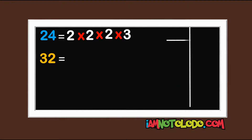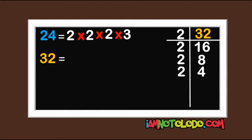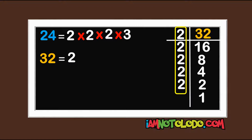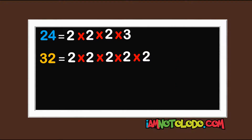Let's do the same thing for 32. 2 in 32 is 16, 2 in 16 is 8, 2 in 8 is 4, 2 in 4 is 2, and 2 in 2 is 1. So let's write these numbers: 2 times 2 times 2 times 2 times 2. Next step: 2 is here, 2 is here — circle it. 2 is here, 2 is here — circle it. 2 is here, 2 is here — circle it.